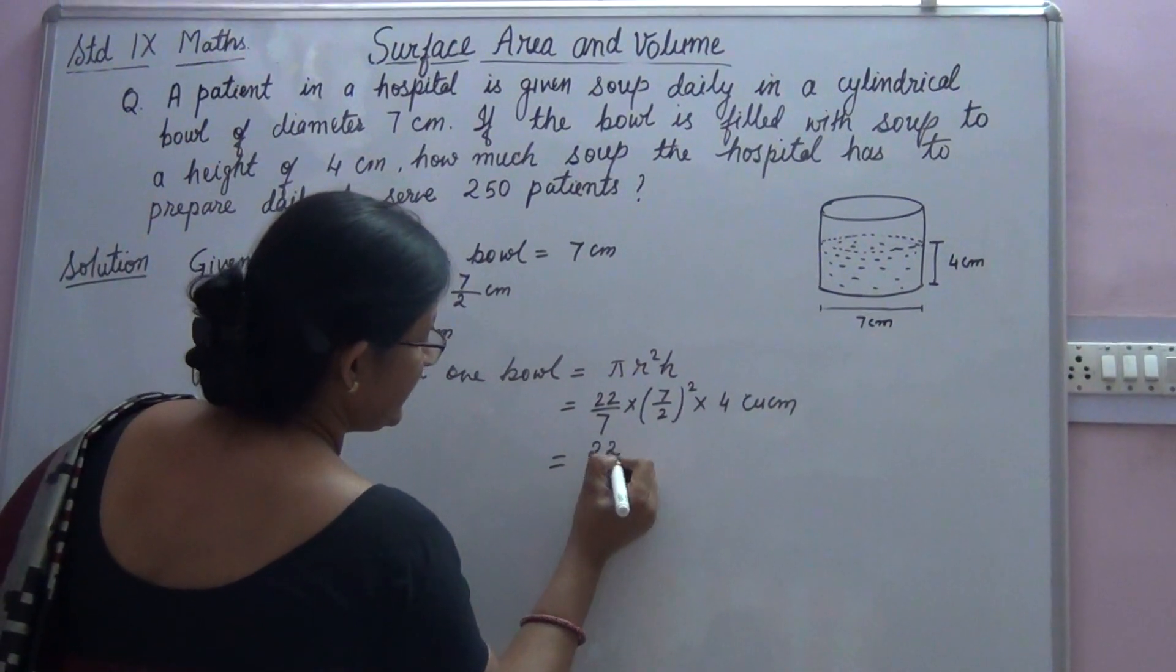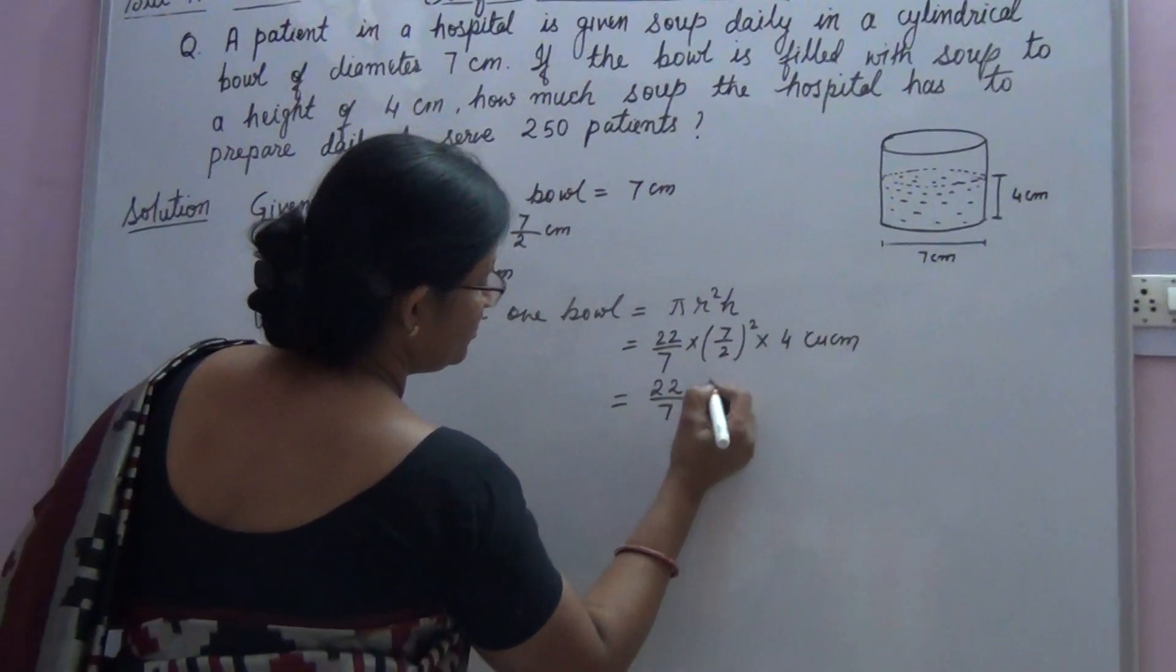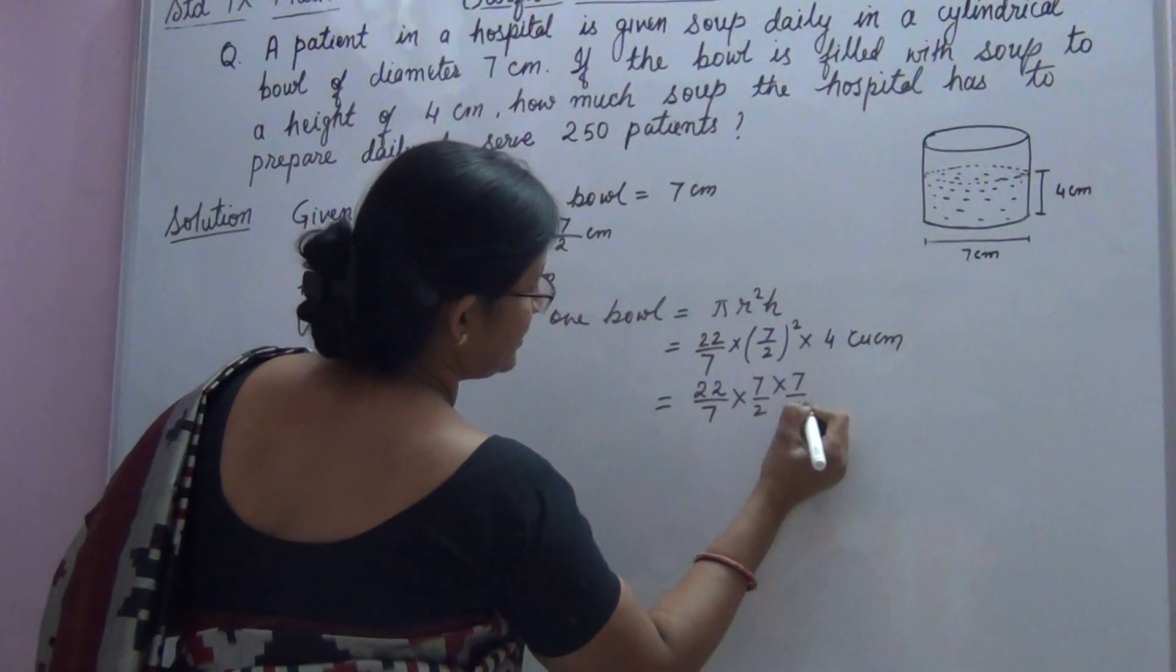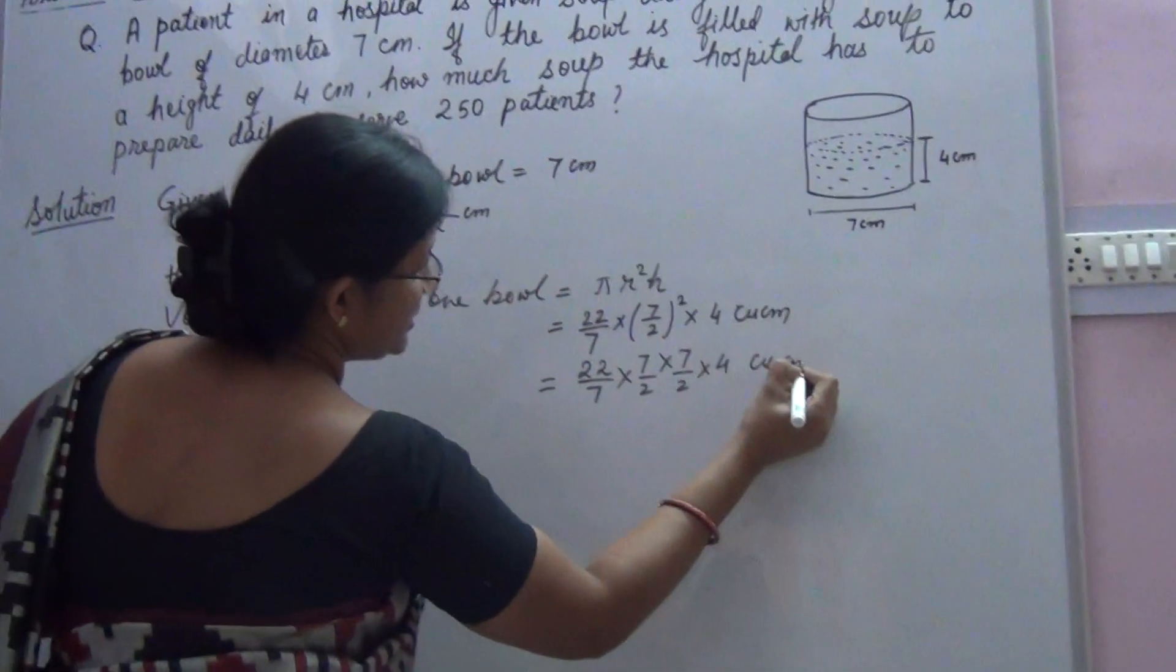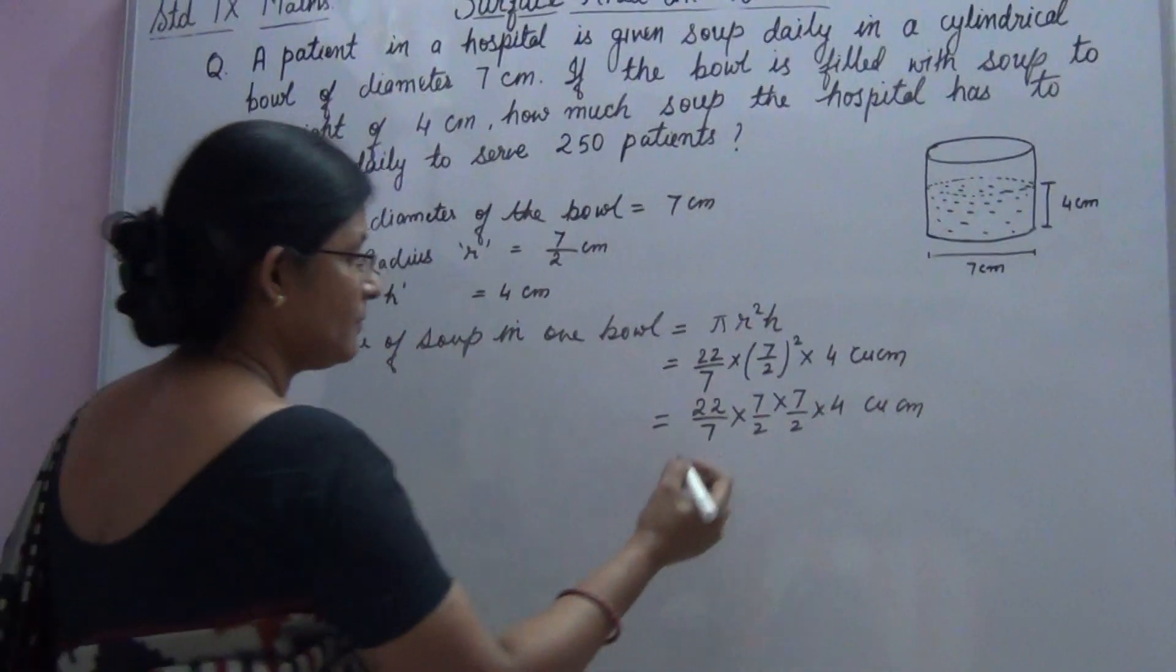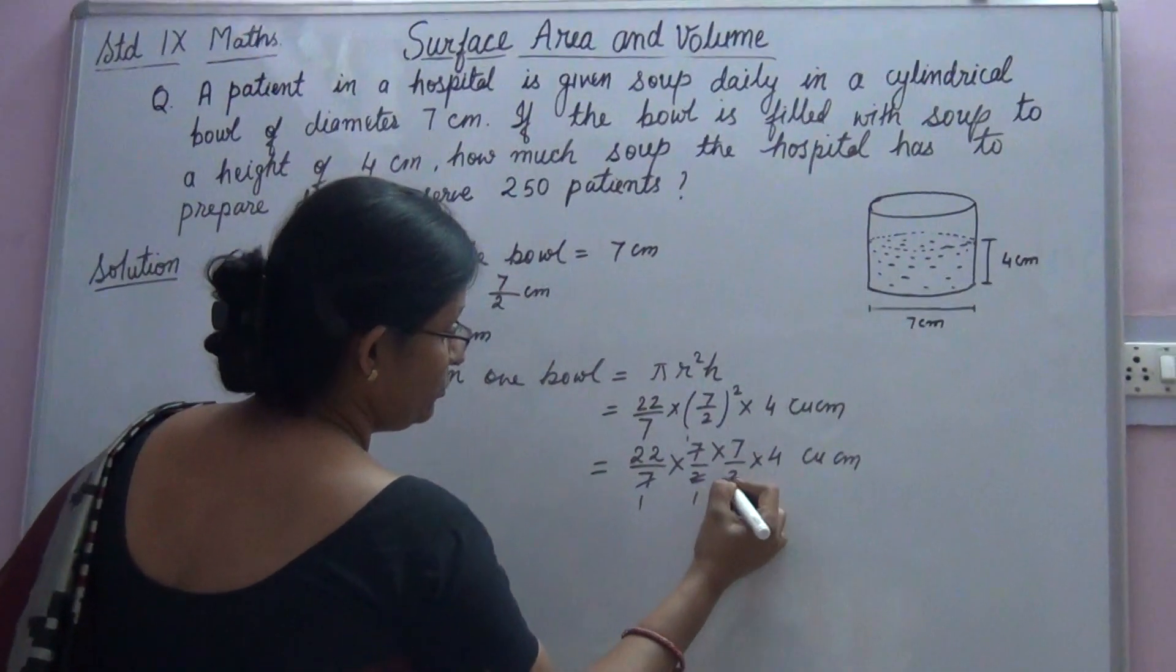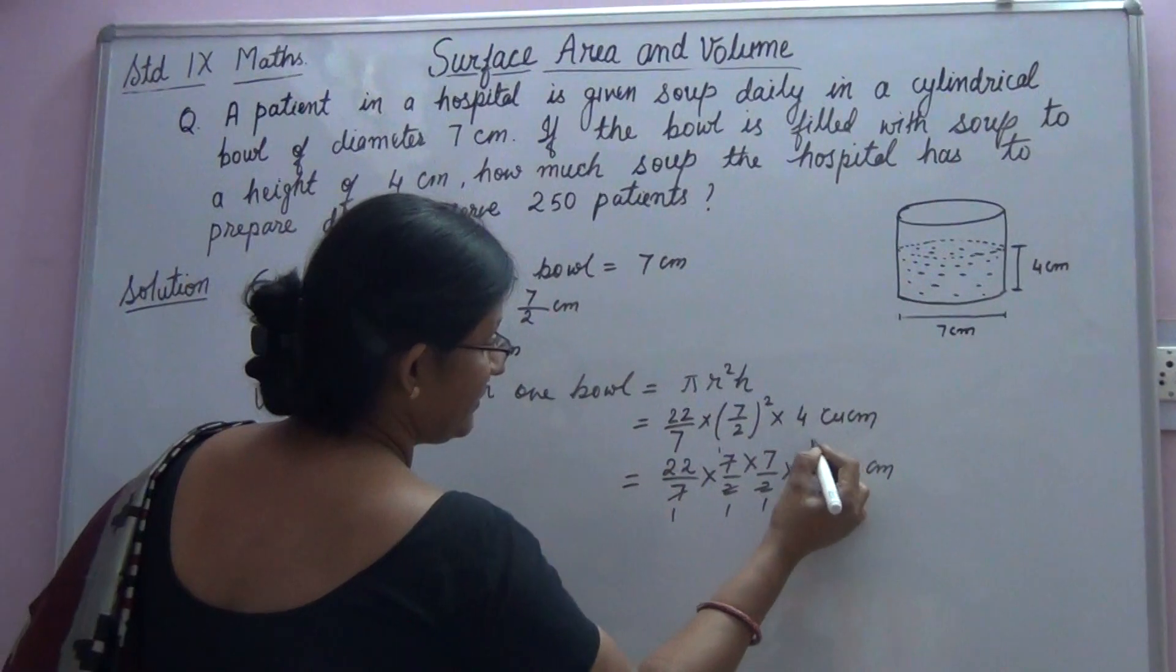This is equal to 22 upon 7 into 7 into 7 upon 2 into 4 cubic cm. Now, by 7, this 7 can be reduced. By 2 and this 2, we can reduce this 4.